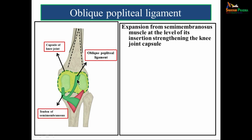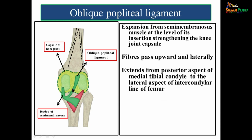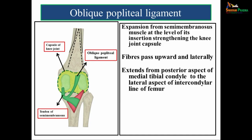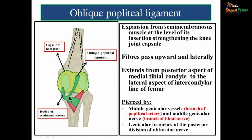The oblique popliteal ligament is an expansion from the semimembranosus muscle. At the level of its insertion, it strengthens the knee joint capsule. Its fibers pass upwards and laterally, extending from the posterior aspect of the medial tibial condyle to the lateral aspect of the intercondylar line of the femur. It is pierced by the middle genicular vessels (a branch of the popliteal artery), the middle genicular nerve (a branch of the tibial nerve), and genicular branches of the posterior division of the obturator nerve.